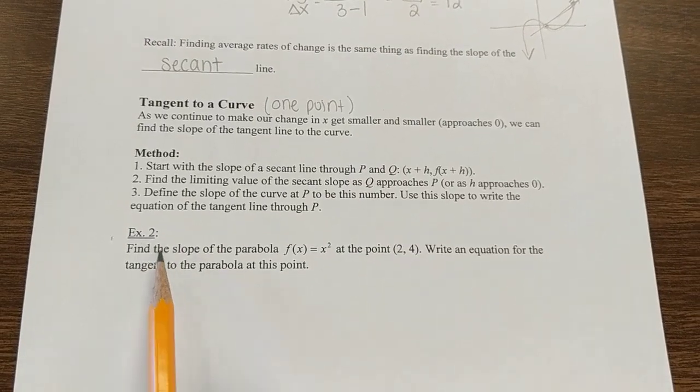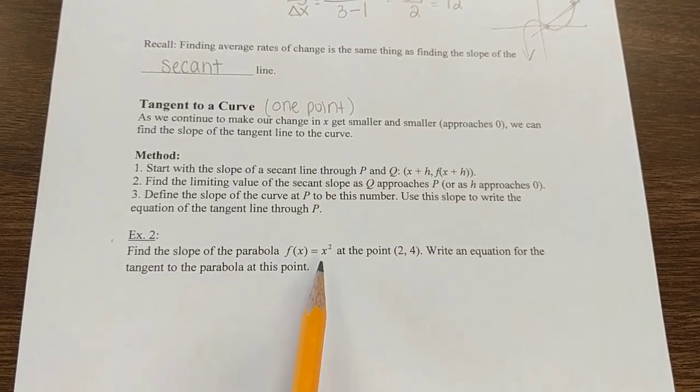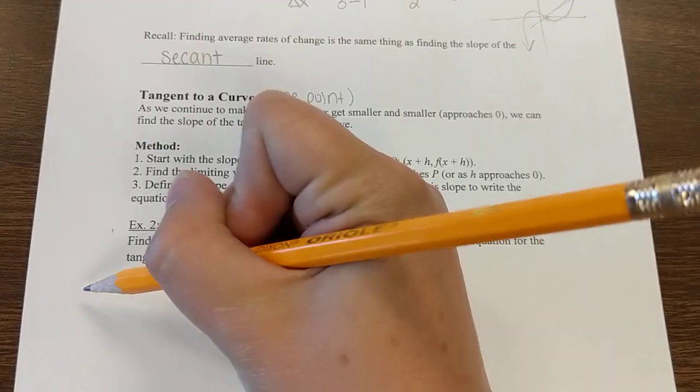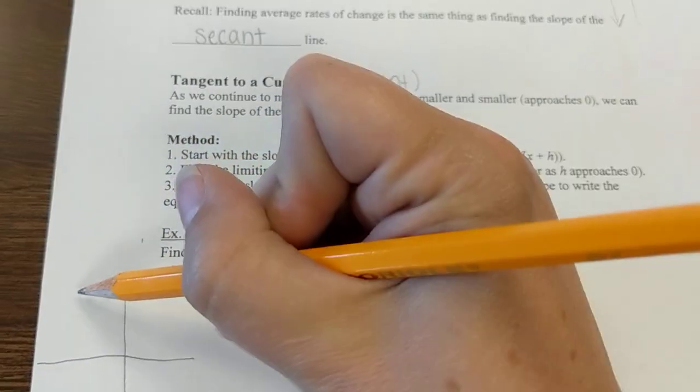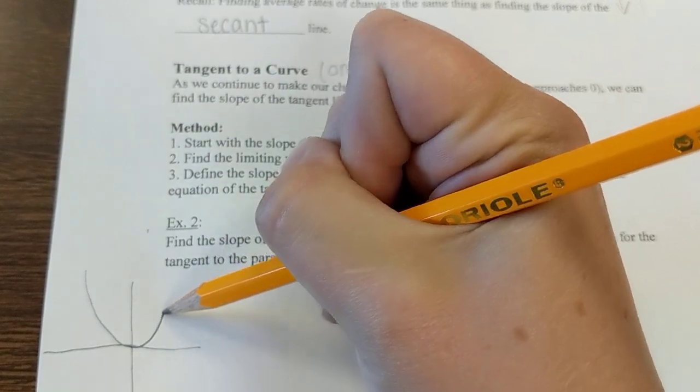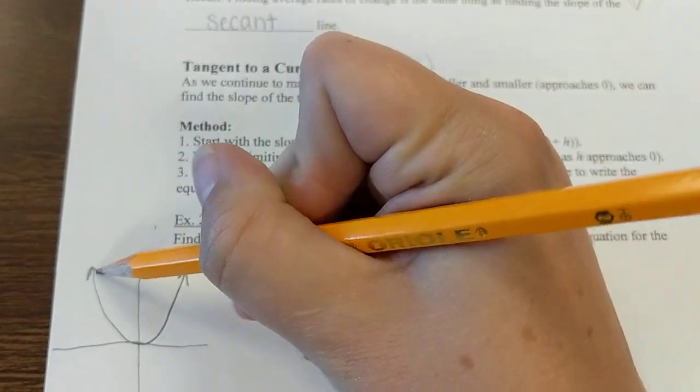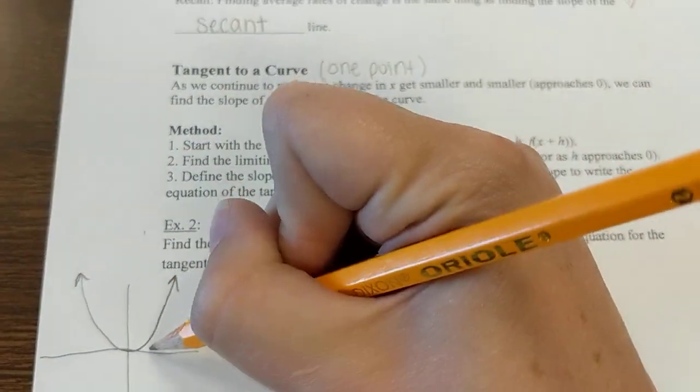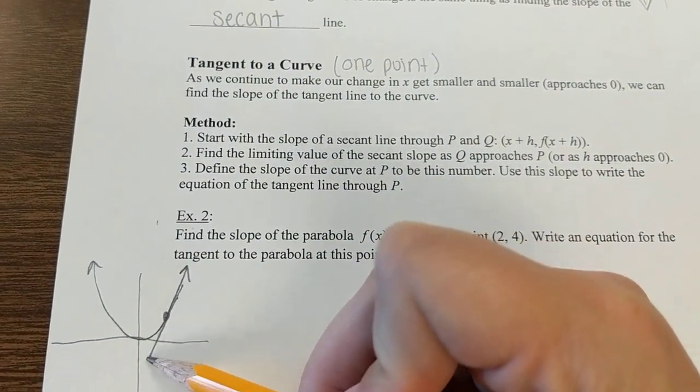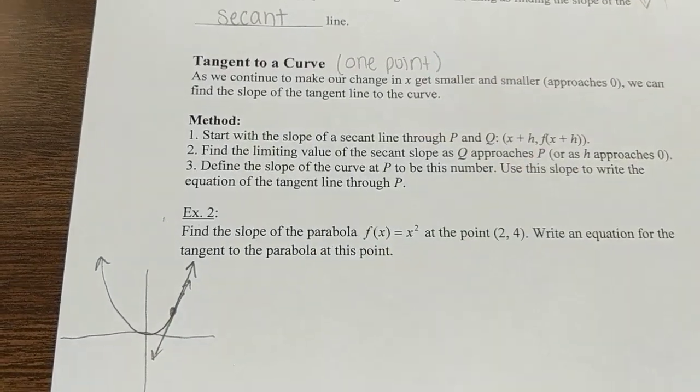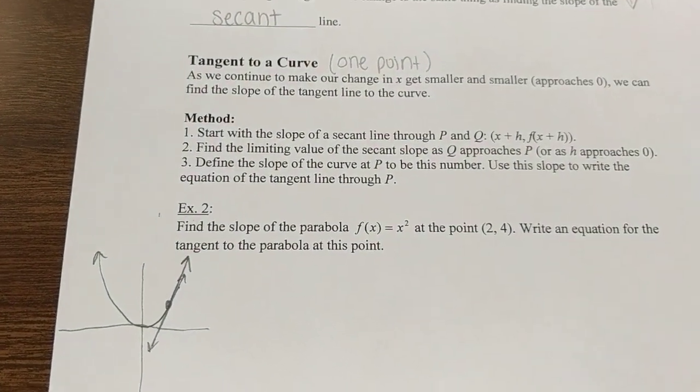We start with the point they give us, then we put a plus h - moving a little bit further away from it. We put the limit out front as that h goes to 0, and then we find the slope. Example 2: find the slope of the parabola y equals x squared at the point (2, 4). I want to sketch a picture so I have a visual. Here's y equals x squared, and at the point (2, 4), we're trying to find the slope of this tangent line right here. It's a pretty steep slope.